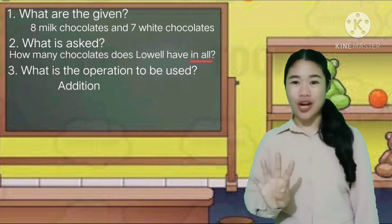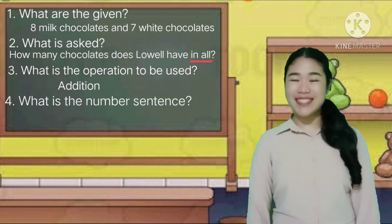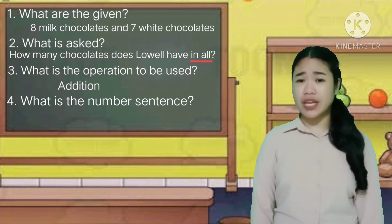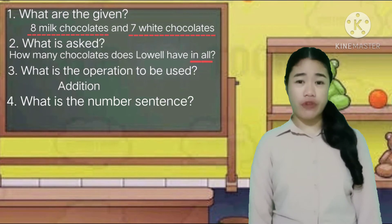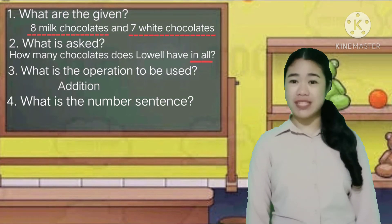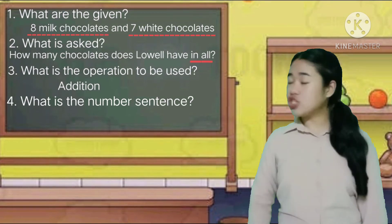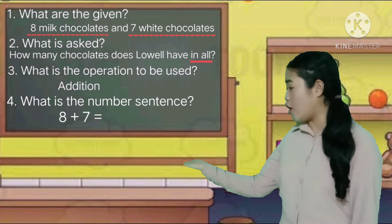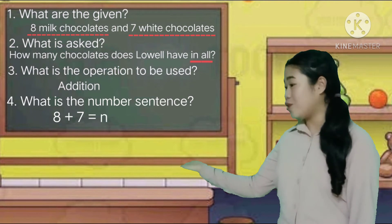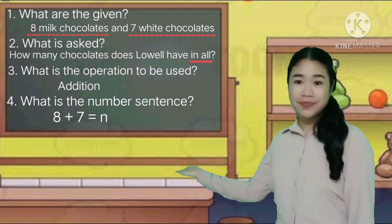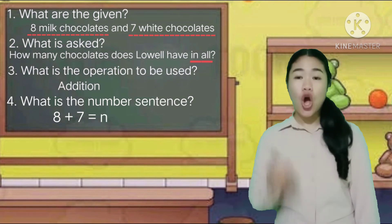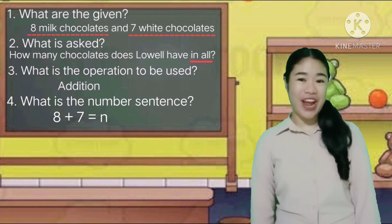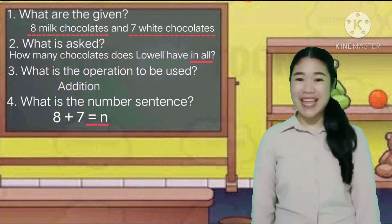Number 4: What is the number sentence? We are going to use the given in writing the number sentence. So, 8 milk chocolates plus 7 white chocolates is equal to n. Always remember to include "equals n" in writing the number sentence.